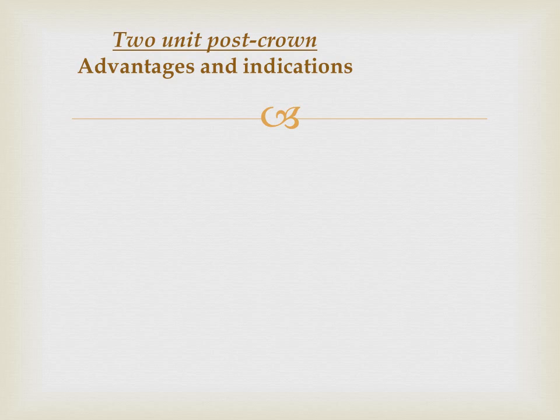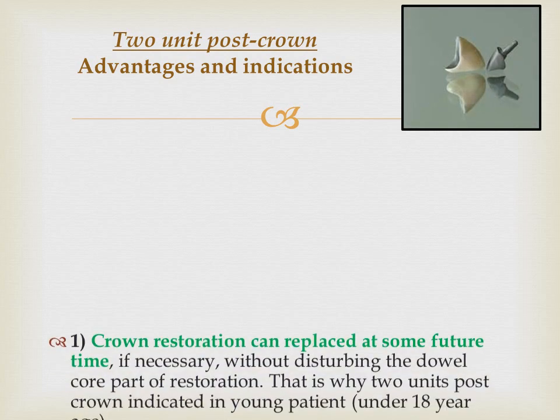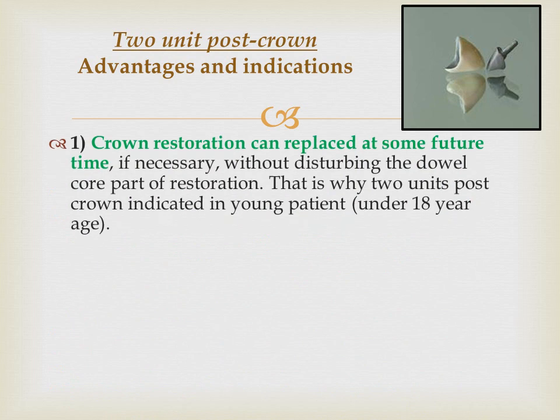The two-unit post crown has more advantages and indications than the one-unit post crown, because the crown restoration can be replaced at some future time if necessary without disturbing the dowel-core part of the restoration. This is why the two-unit post crown is indicated in young patients, meaning patients under 18 years old.